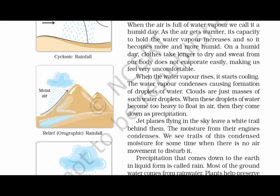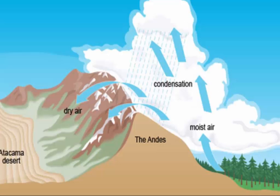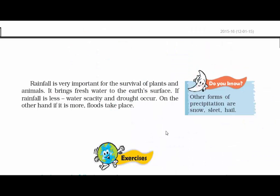When water vapor rises, it starts cooling. The water vapor condenses, causing the formation of droplets of water. Clouds are just masses of such water droplets. When these droplets of water become too heavy to float in the air, they come down as precipitation. Precipitation that comes down to Earth in liquid form is called rain. Most of the groundwater comes from rainwater.